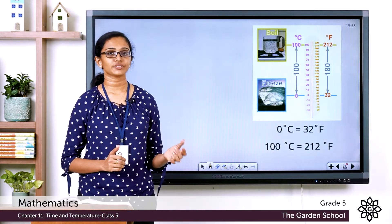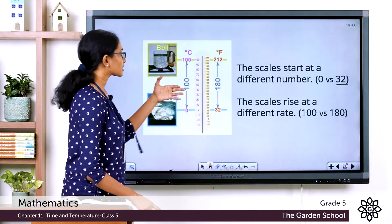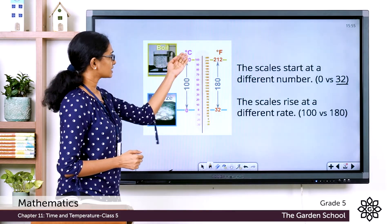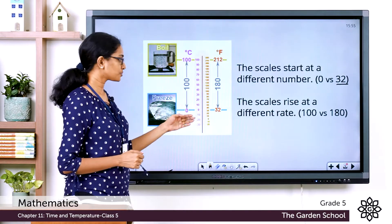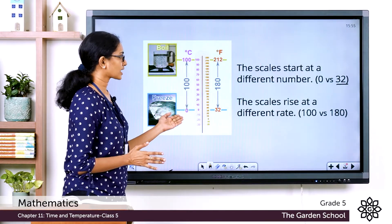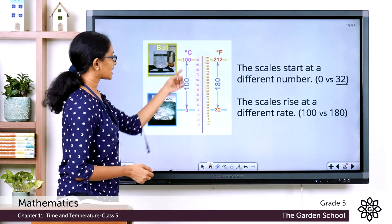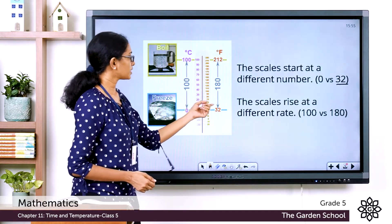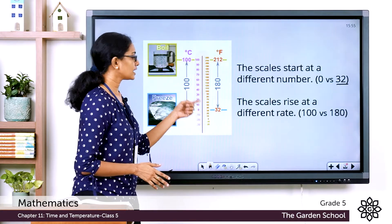How do we convert a temperature in one scale to a temperature in the other scale? Look at this picture — you can see a thermometer with the Celsius scale and the Fahrenheit scale. When you observe carefully, you can see that on the two scales, the scales start at a different number. On the Celsius scale, the scale starts at 0 degree Celsius, but on the Fahrenheit scale, the scale starts at 32 degree Fahrenheit.